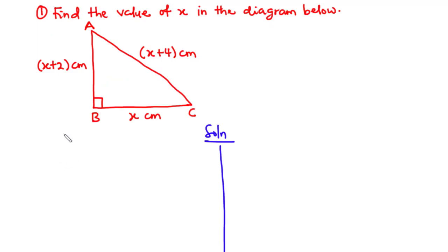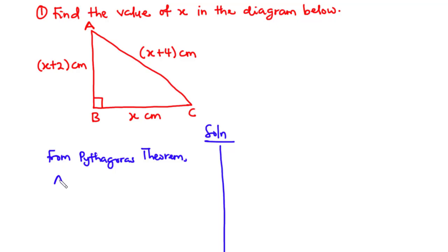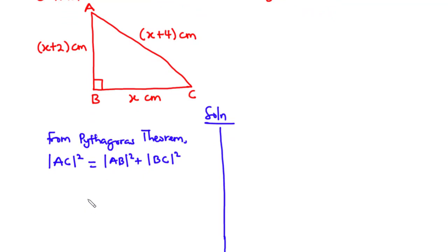From the Pythagorean theorem, the square of the hypotenuse for any right-angled triangle is equal to the sum of the squares of the other two sides. So AC² = AB² + BC². Substituting the values, we have (x + 4)² = (x + 2)² + x².